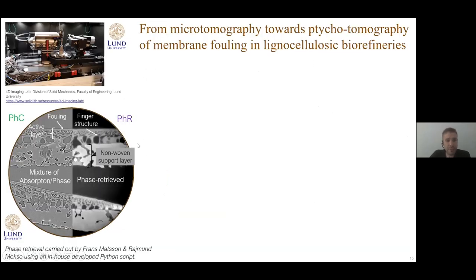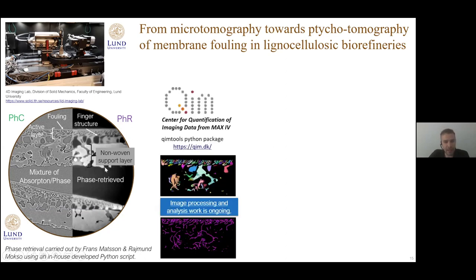We carried out a lot of scans on the lab-based scanner. I can show you the benefit of applying phase retrieval, where you really increase the contrast-to-noise ratio. We can clearly see the difference between different components inside the sample because it's like taking something invisible and making it visible. By applying phase retrieval, it becomes much easier to segment the data, carry on with image processing and image analysis. This is work in progress, and we're using some codes from the KIMMFAB initiative.